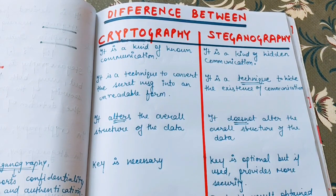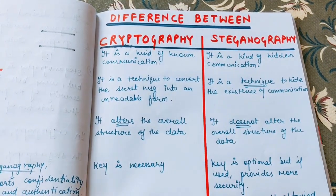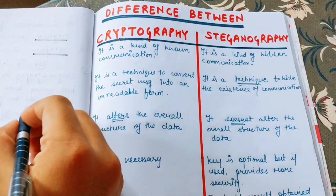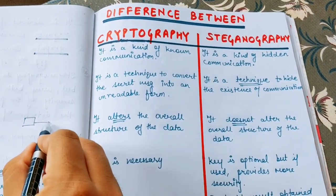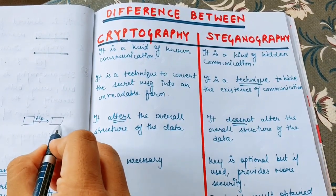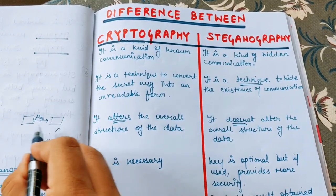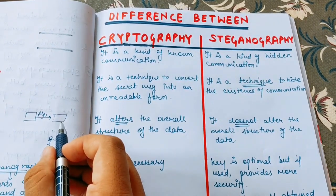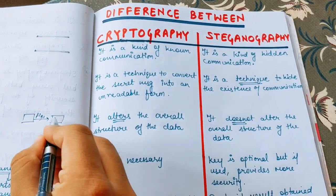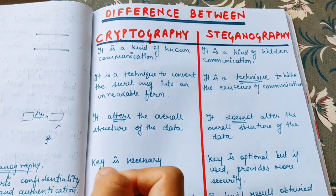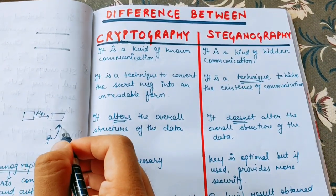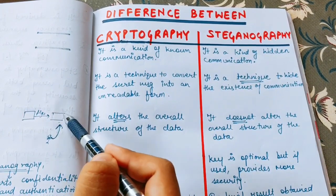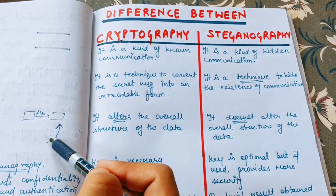Now let's start — what is cryptography versus steganography? In cryptography, we send information from sender to receiver by converting that data into an unreadable format. For example, if we have some message, we use algorithms to convert that data into an unreadable format. If there is an attacker, he will be able to see that communication is happening and he will see this unreadable data, but he will not be able to see the exact message. So this is a kind of known communication — the attacker can see we are sending some data, and the cipher text is available to him.